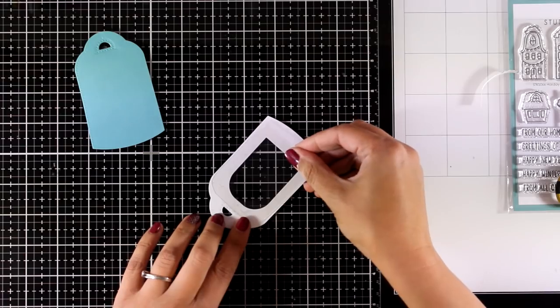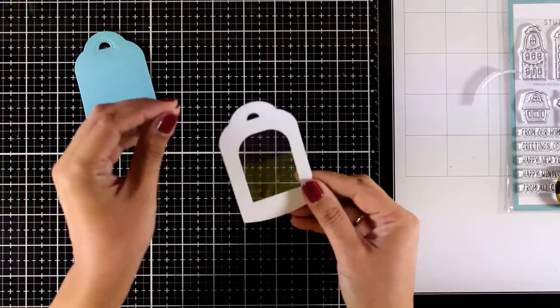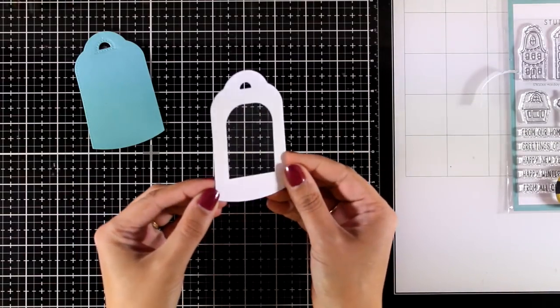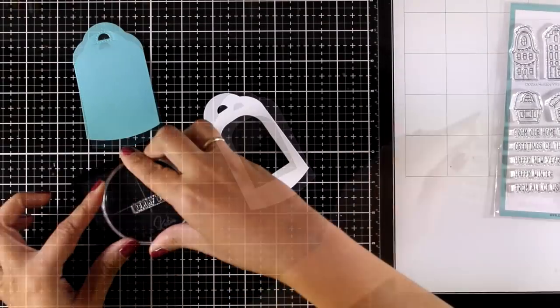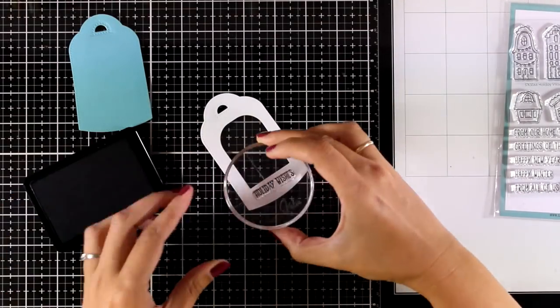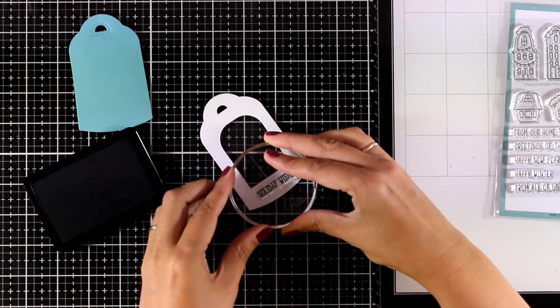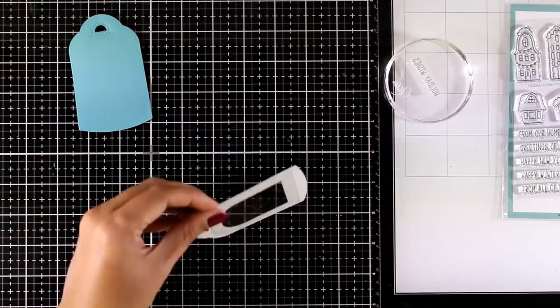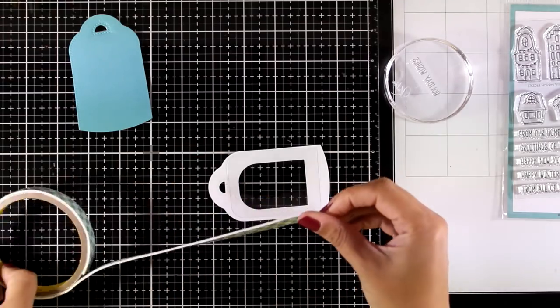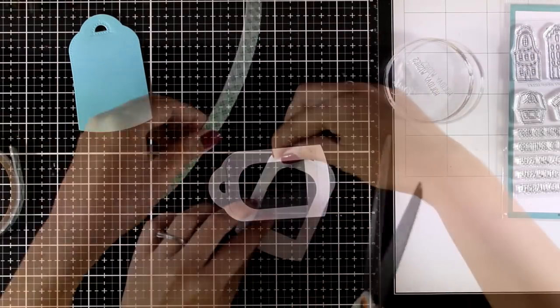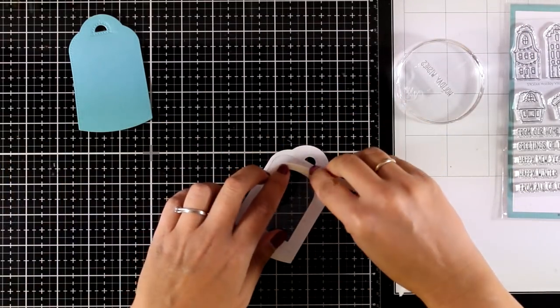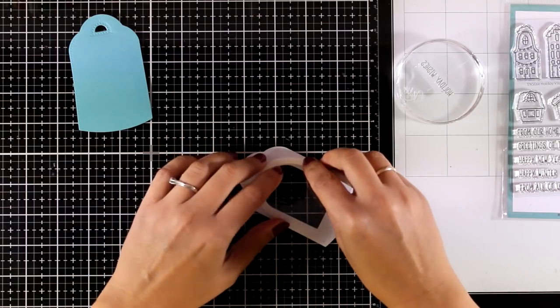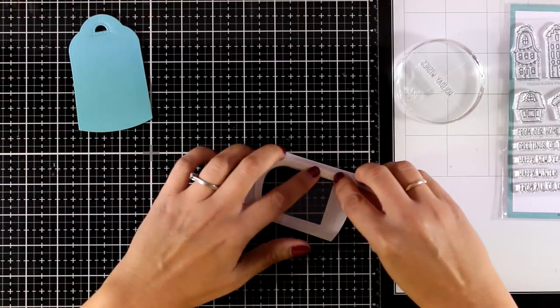You will see that I am going to share today four examples, two of them are going to be shaker cards and the other two are not. Now before I go ahead and put everything together I need to stamp the sentiment at this stage before I add too much bulk, so I'm going to stamp one of the sentiments from the stamp set that says holiday wishes. And now I'm using my foam tape and I'll go all around that window at the back making sure that I don't leave any gaps otherwise my shaker mix is going to fly away.